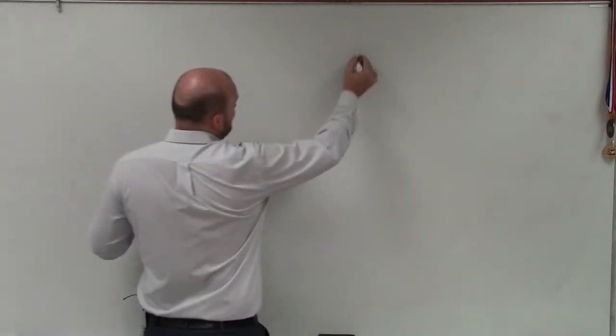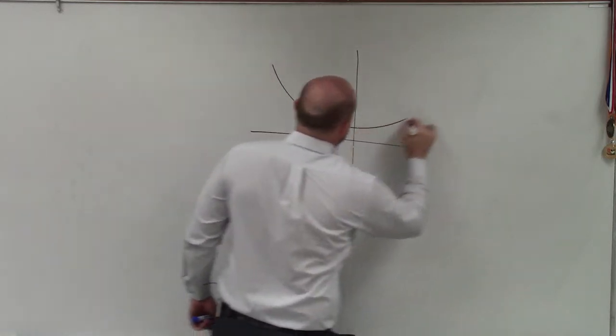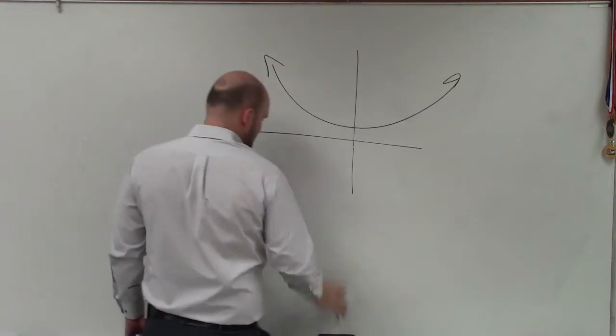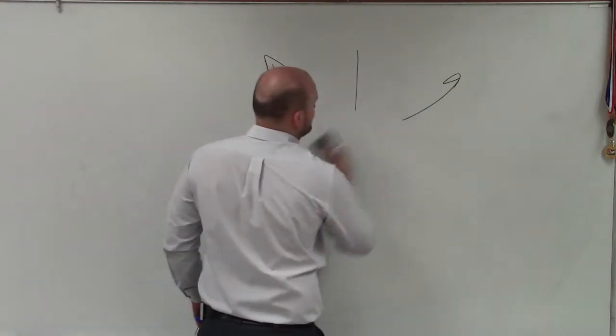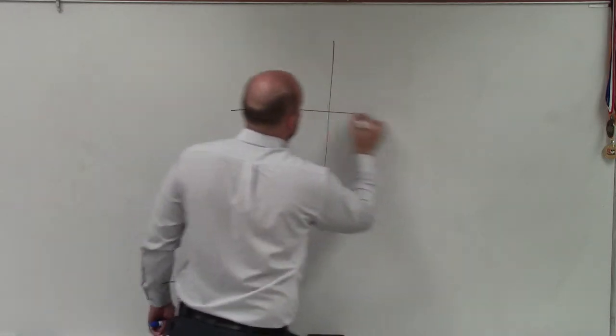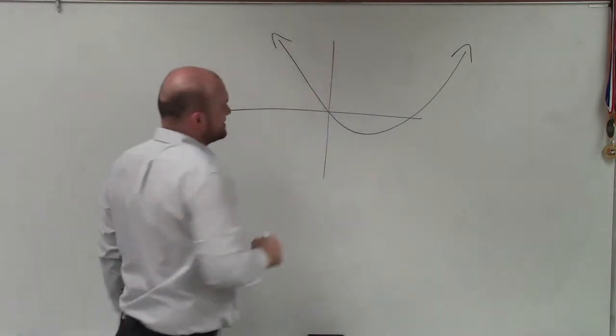So the basic definition of a parabola, I'm just going to go through one here. We have this U-shaped, actually I don't want to use that U-shaped. Let's do a parabola. Looks like this. OK, so here's a parabola that has this U-shape.